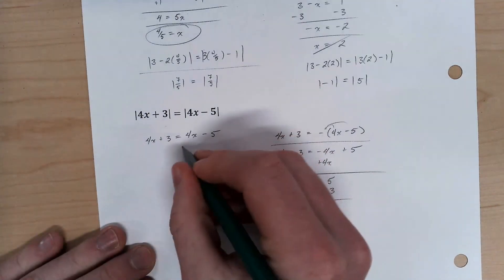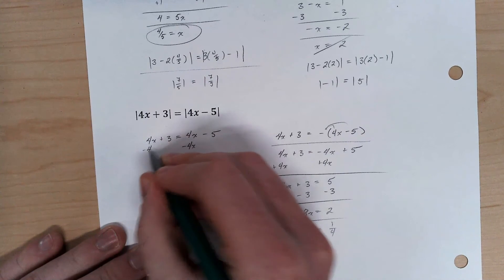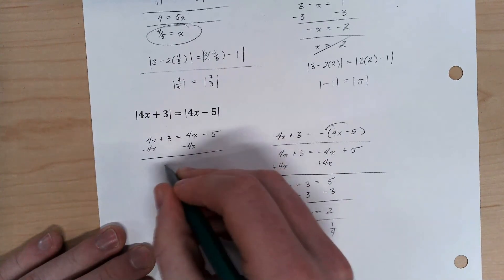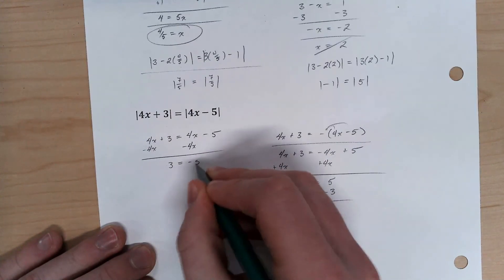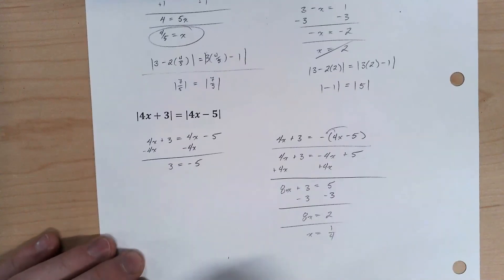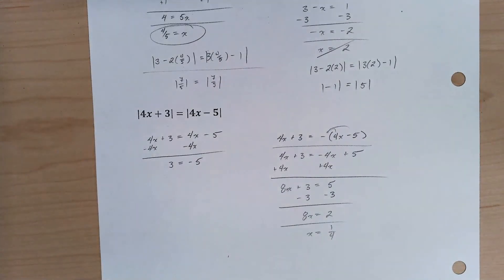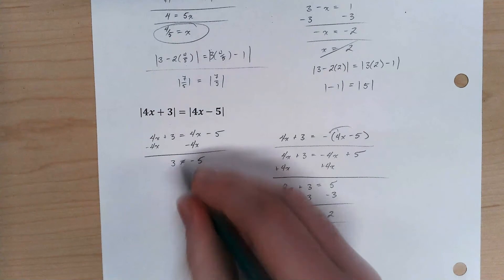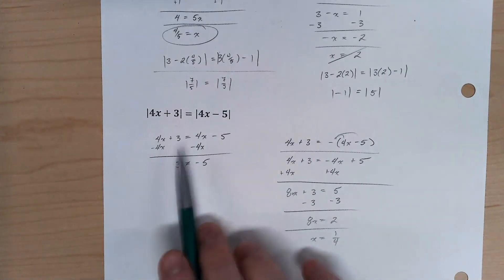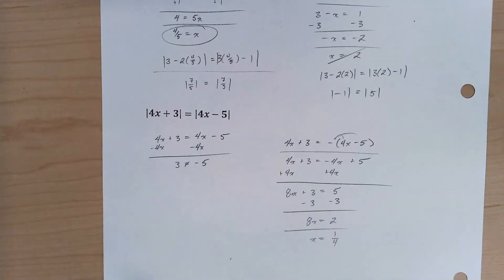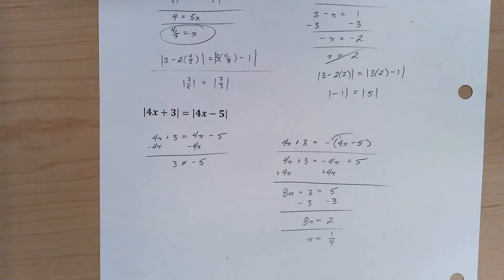If I solve this one out I end up in a problematic spot. That goes to 0. So I end up with 3 equals negative 5. Well, that's not true. So I'm not going to get an answer out of this one. I'm just going to get this answer out of it.